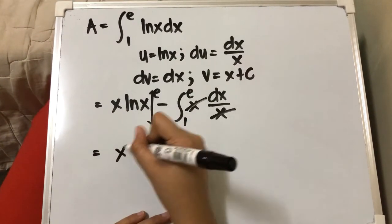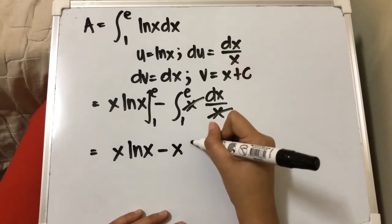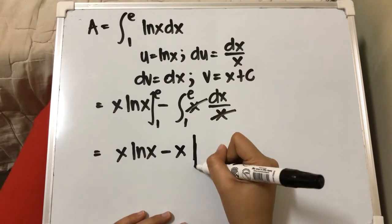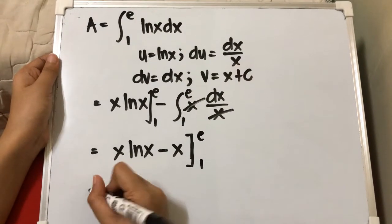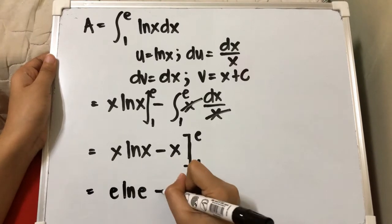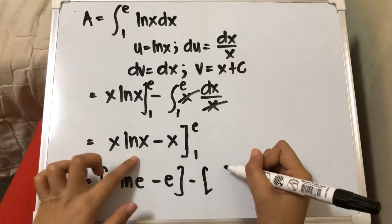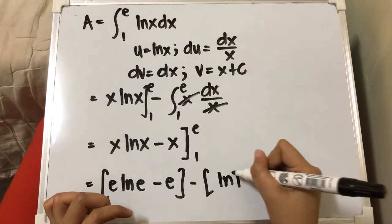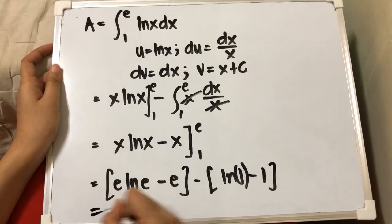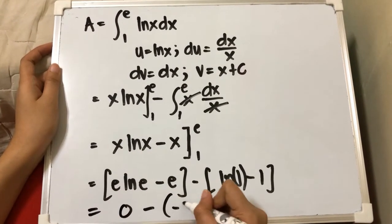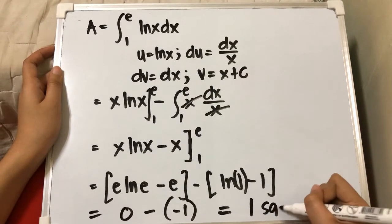Combining, we have x ln x minus x, evaluated from 1 to e. Substituting the upper limit: e ln e minus e, minus the lower limit: 1 times ln 1 minus 1. Since ln e equals 1 and ln 1 equals 0, this simplifies. The area of our problem is equivalent to 1 square unit.